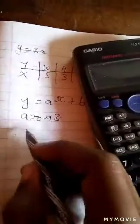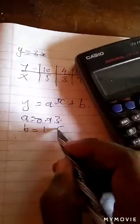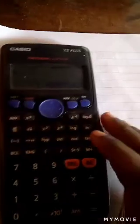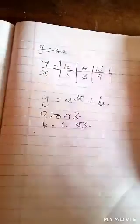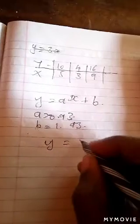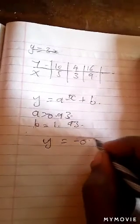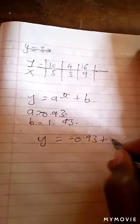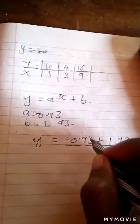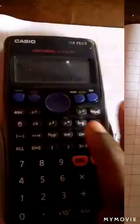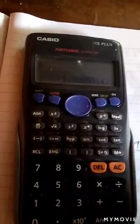So our equation will be, to form an equation it will be y equals to negative 0.93 plus 1.93x. That's our linear equation.